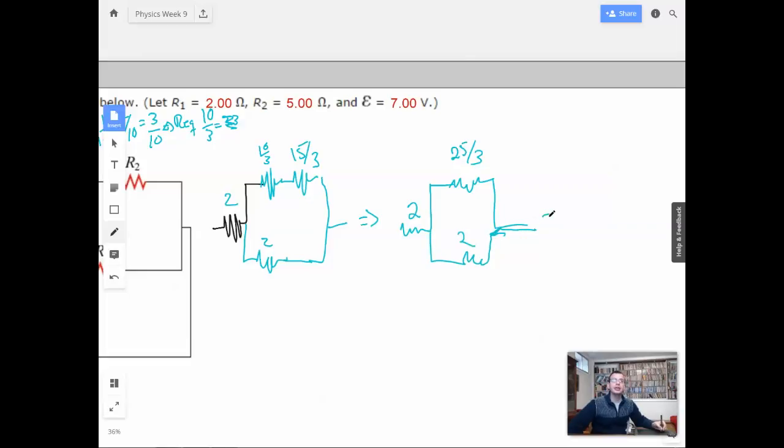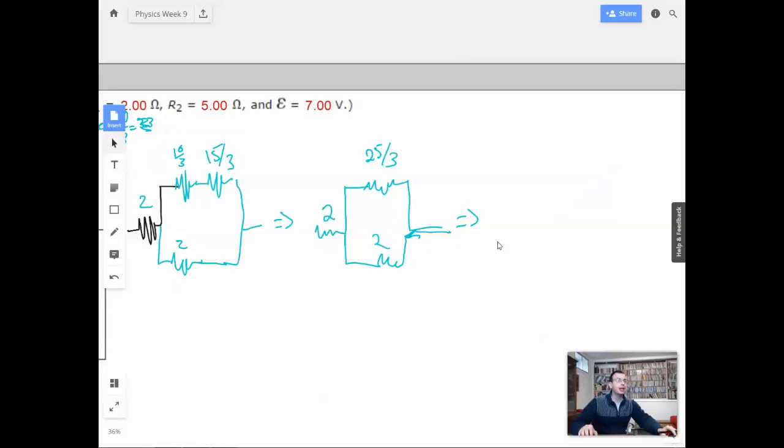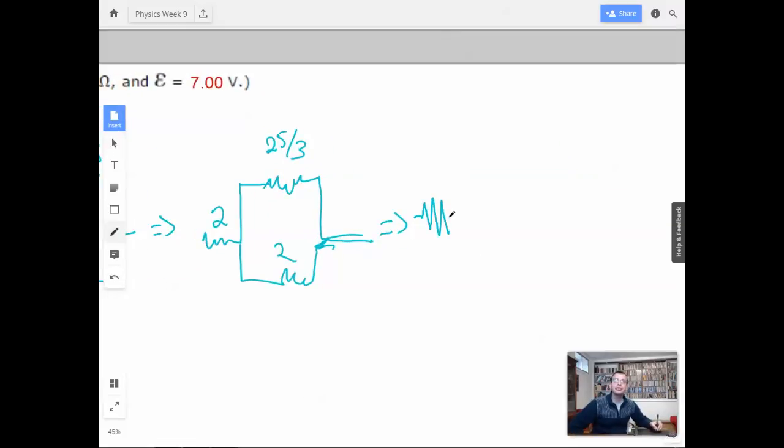Now we want to combine the top and bottom in parallel. So we're still going to have our 2 ohm resistor. And now I'm going to do 3/25 plus 1 half. Okay. So the 3/25, I can write that as 6/50ths. I can write the 1 half as 25/50ths. So this is basically like 8. So it's going to be the dominant one.